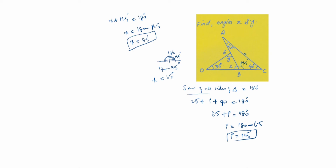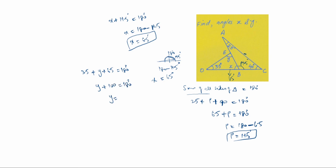Now we have two known values: x = 65° and p = 115°. Using the same approach for the second triangle — the sum of all angles is 180° — we get: 35° + y + 65° = 180°, so 100° + y = 180°, and y = 180° − 100° = 80°. Therefore y = 80°.